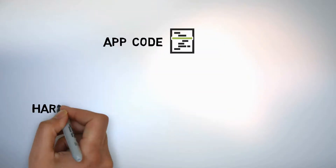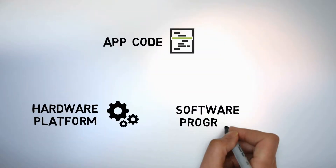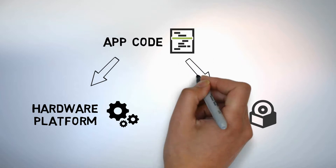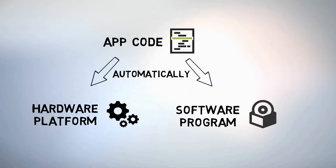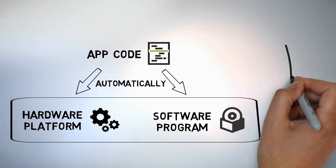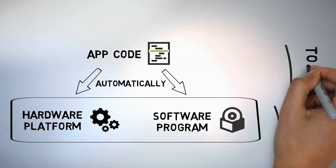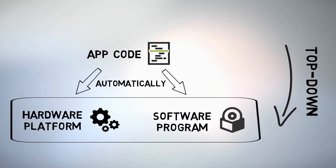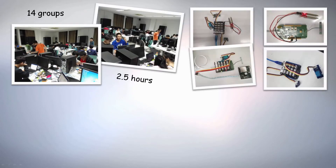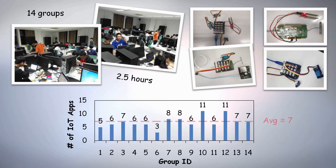Unlike traditional approaches, TinyLink uses app code to automatically generate hardware platforms and software programs. This top-down approach greatly accelerates the developing process. In a class of two and a half hours, 14 groups of students built about seven IoT applications on average.